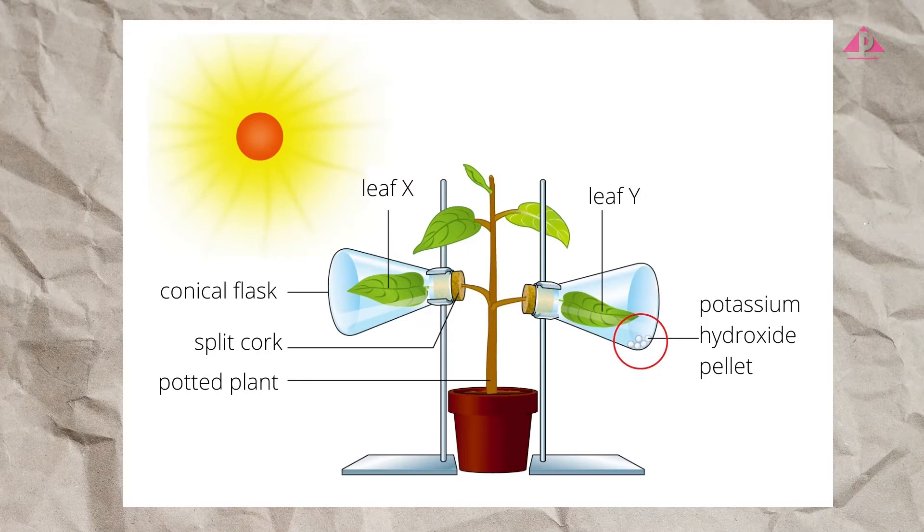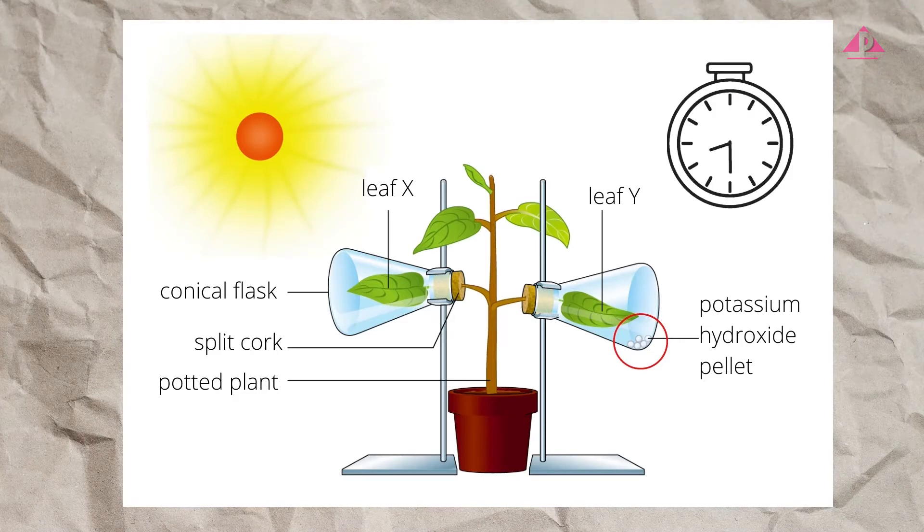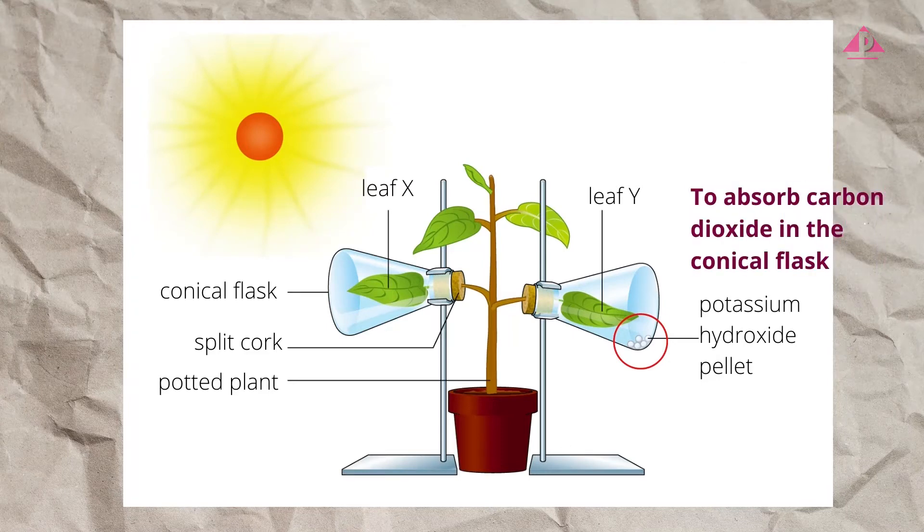Think about why potassium hydroxide pellets are added to the flask. To absorb carbon dioxide in the flask. So we can deduce that the independent variable of this experiment is supply of carbon dioxide to the leaf.